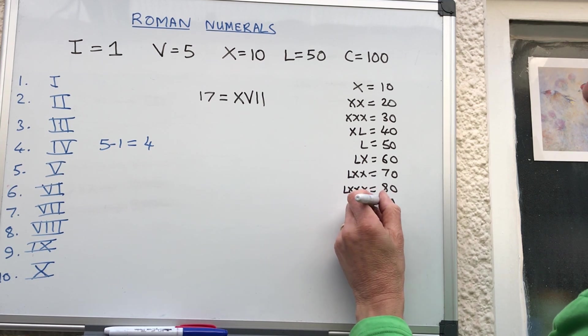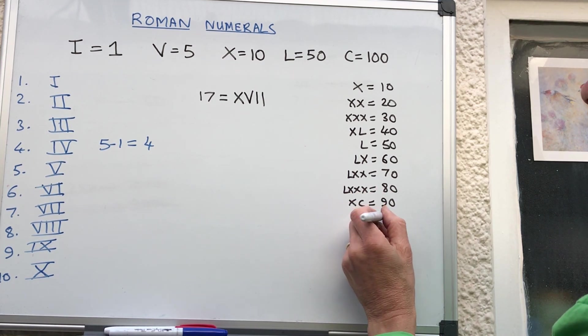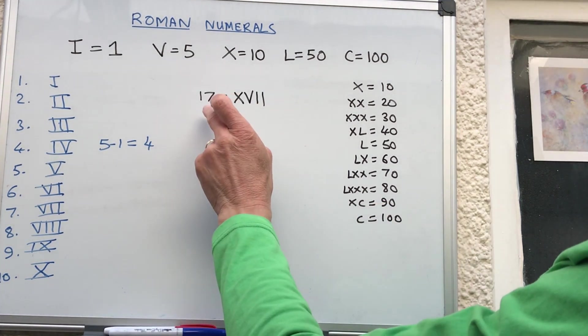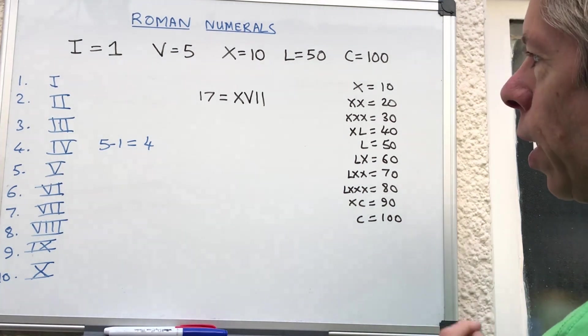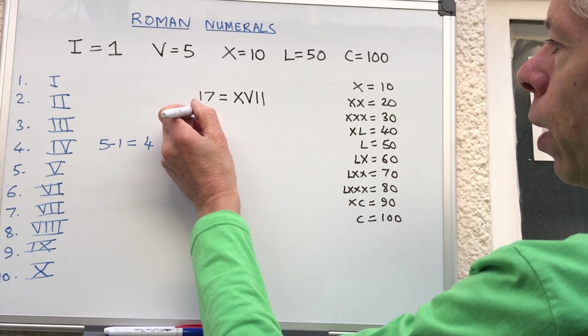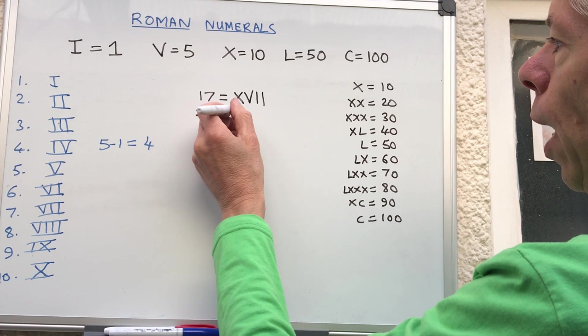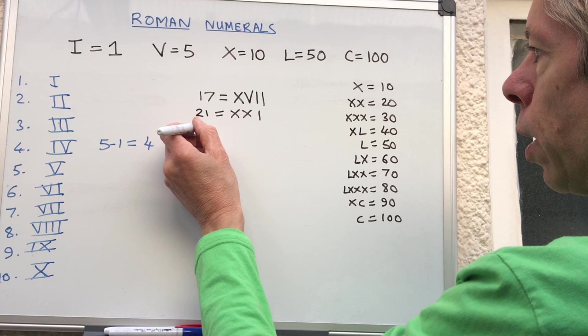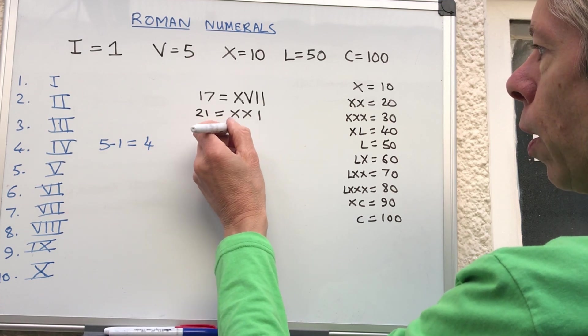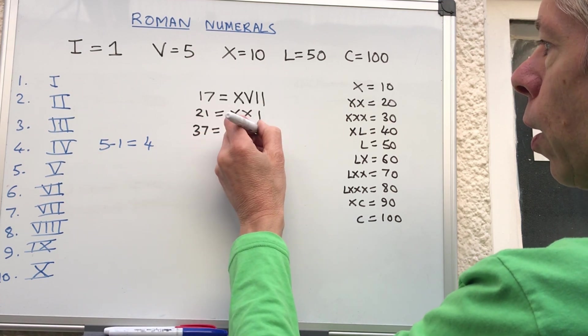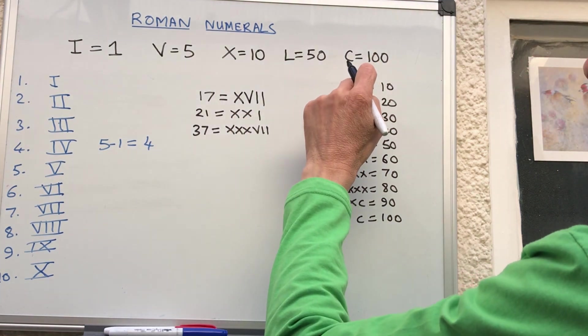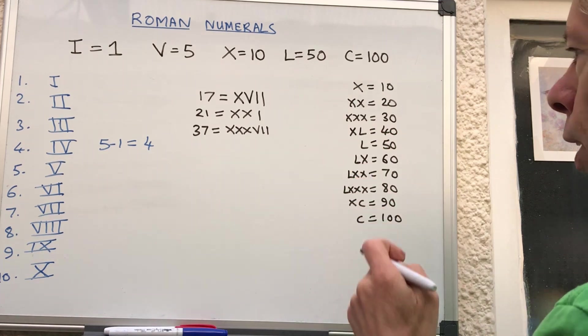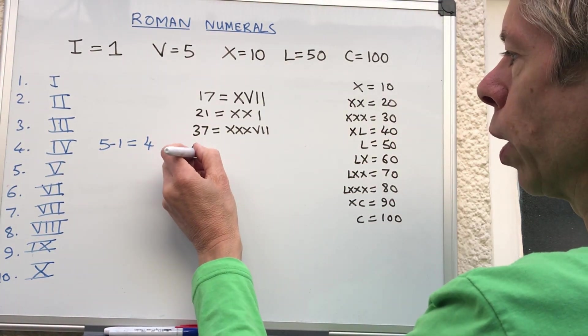100 is C. If you want to do a number between 20 and 30, let's choose 21, so that would be XXI. Let's do a number in the 30s - 37 would be XXXVII. You always use the same symbols to make 10, 20, 30, 40, etc. Let's do one in the 40s - 49.